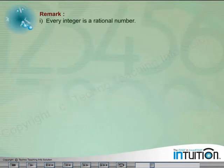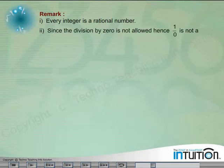Remark 1: Every integer is a rational number. Remark 2: Since the division by 0 is not allowed, hence 1 by 0 is not a rational number.